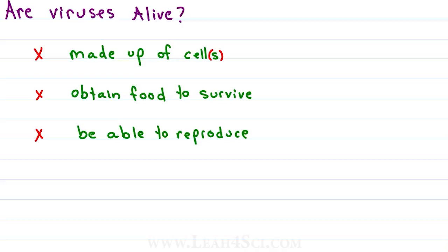Wait a minute — isn't this why the world is panicking over the seasonal flu and coronavirus? Because it keeps growing and spreading? Actually no. The virus hijacks a living cell and tricks the cell into making more viral particles, but the virus itself doesn't have children. It forces another living organism to create more viruses, which is something we'll discuss in part 2 of this series.